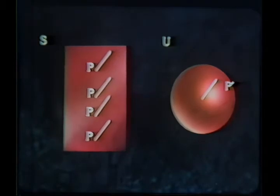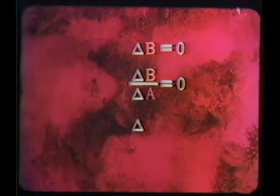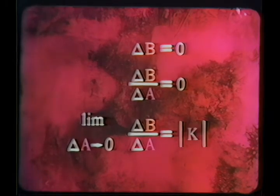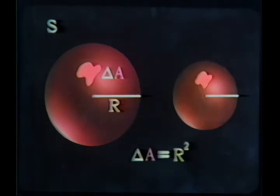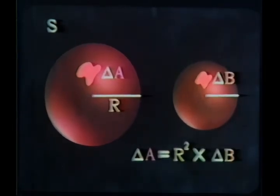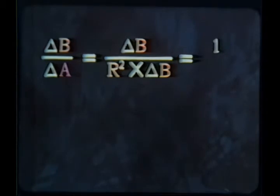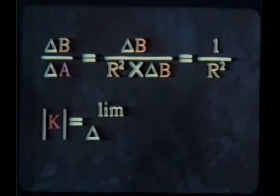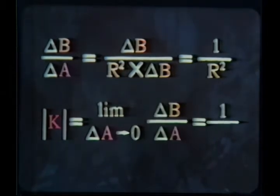If S is a plane, every point P maps into the same point P prime, so delta B is zero. Hence the curvature K of a plane is zero. If S is a sphere of radius R, the area of a patch delta A is R squared times the area of the corresponding patch delta B, because of the properties of similar figures. Hence delta B divided by delta A is equal to one divided by R squared, and so the curvature K is one divided by R squared.